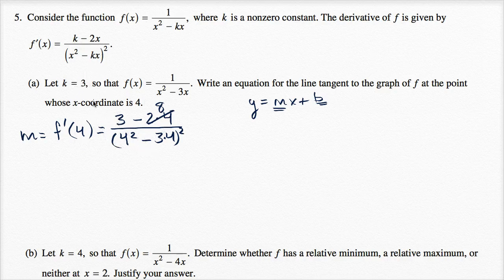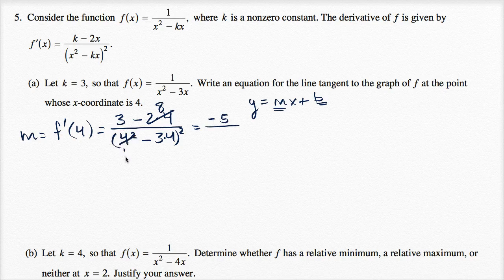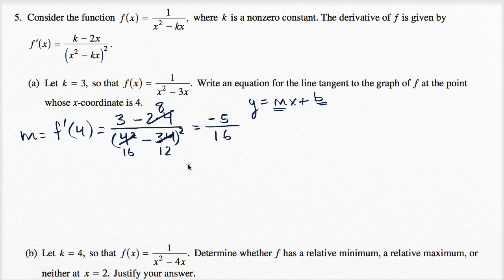All I did is substitute x with four and k with three into f prime of x, which is three minus two x over x squared minus three x, all squared. The numerator is three minus eight, which is negative five; the denominator is 16 minus 12, which is four, then squared — so m is equal to negative five sixteenths.